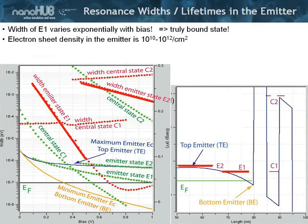But on the other hand, in the previous plots I had shown you that there's a lot of charge sitting in that emitter. There's actually a sheet density charge of roughly 10^10 to 10^12 per square centimeter. Lots of electrons, lots of scattering, lots of incoherent processes. A truly bound state really doesn't exist there.